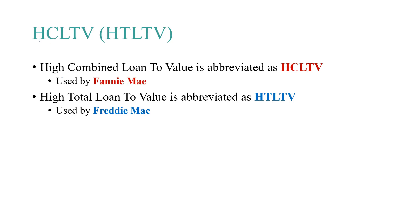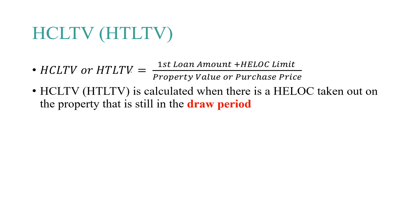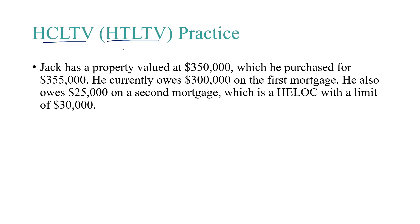Now let's talk about the high combined loan-to-value, or HCLTV, used by Fannie Mae, and the high total loan-to-value, or HTLTV, used by Freddie Mac. The equation for HCLTV or HTLTV is: the first loan amount plus the HELOC limit, divided by the property value or the purchase price, whichever is lower. This is calculated when there is a HELOC on the property that is still in the draw period.